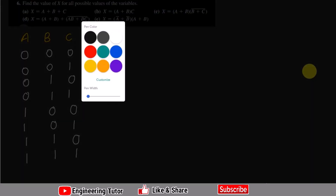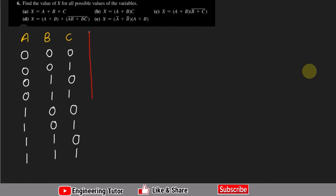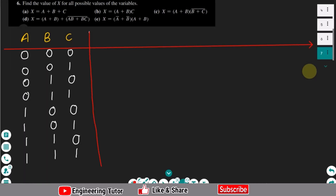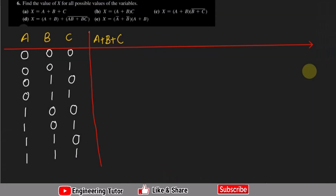Question A is a plus b plus c — that is the OR operator. If any of the inputs is 1, the output will be 1. So for the all-zero combination the output is 0, and for all remaining combinations the output is 1, 1, 1, 1, 1, 1, 1. That is the easy one.